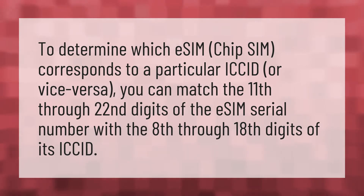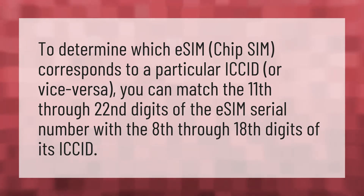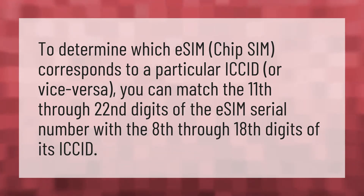To determine which eSIM corresponds to a particular ICC ID or vice versa, you can match the 11th through 22nd digits of the eSIM serial number with the 8th through 18th digits of its ICC ID.